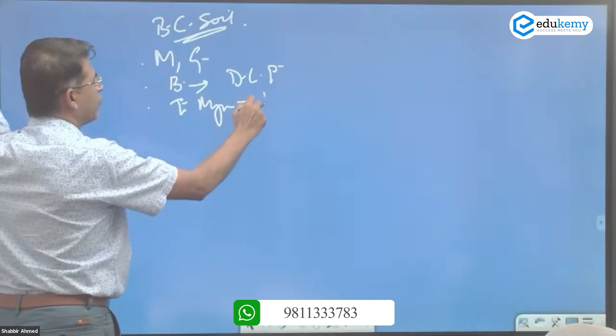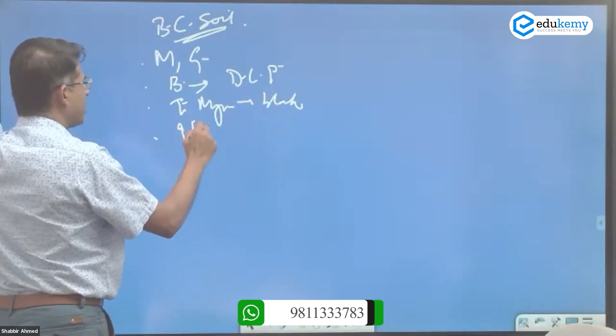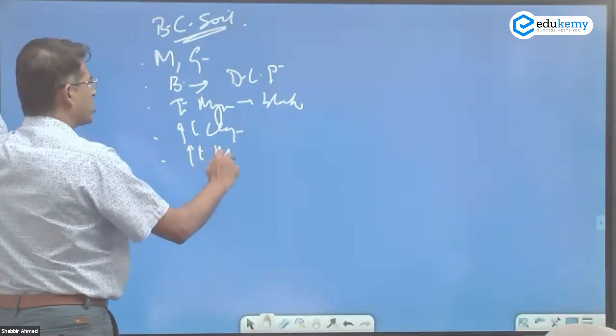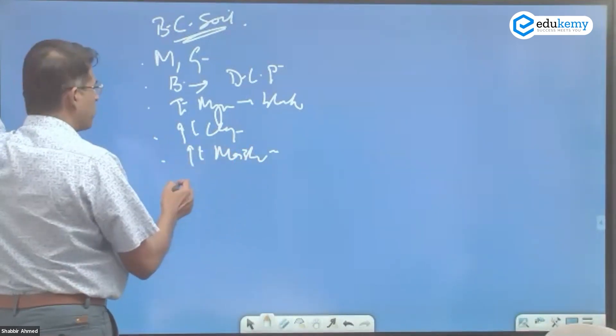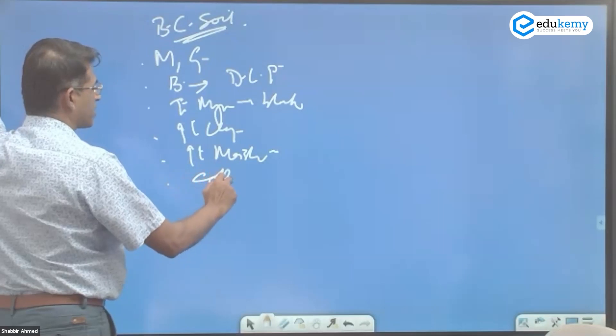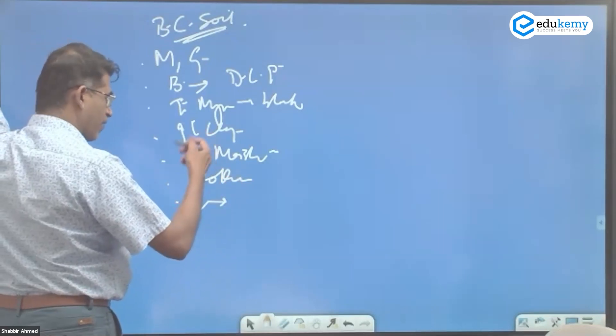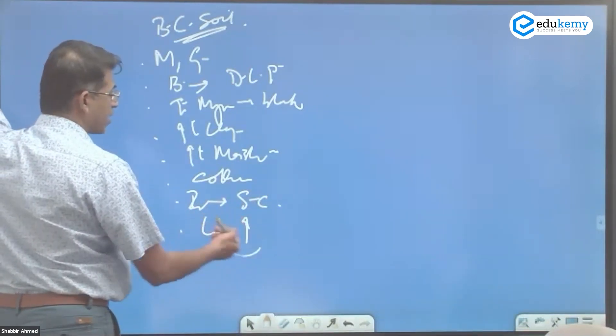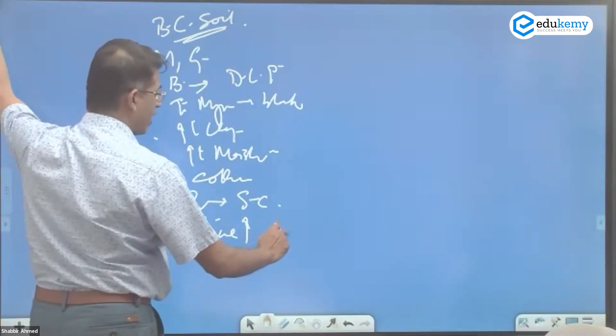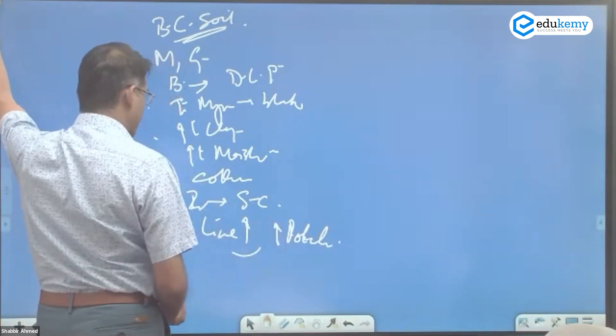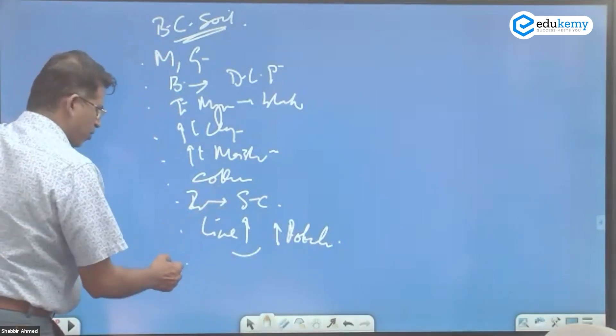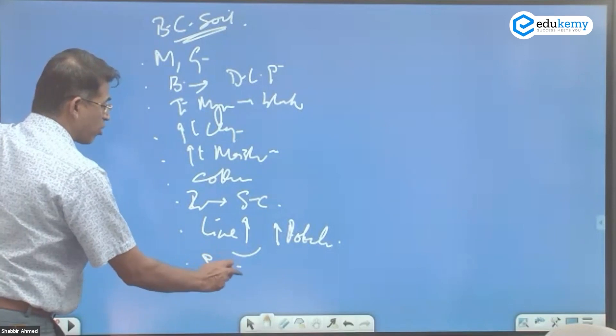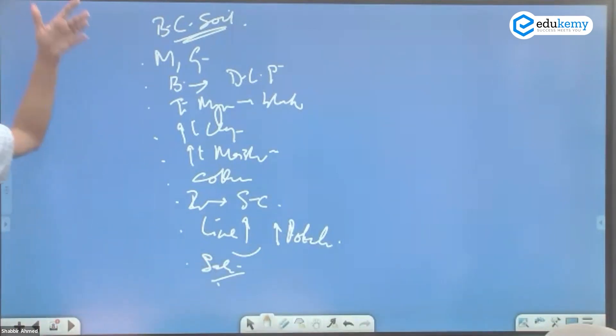Black cotton soil has titaniferous magnetite and therefore it is black. It has a very high clay content, very high moisture retention capacity. It is important for cotton cultivation, but because of irrigation we also cultivate sugarcane. It also has high lime content, also has a good amount of potash content. But because of over-irrigation, there are salinization problems.